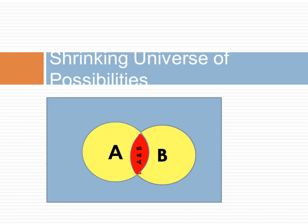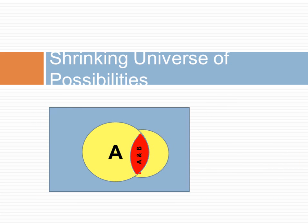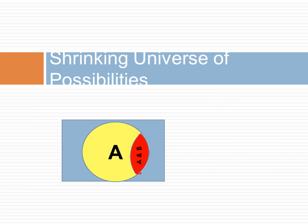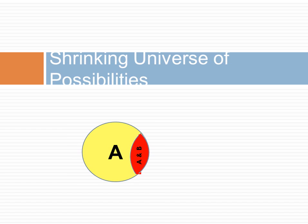So let us begin by shrinking the universe of possibilities. Now the only event possible is A. All the blue area is gone. The event B alone, without A, is gone. This shrinking universe of possibilities helps you think through the calculation of conditional probability.